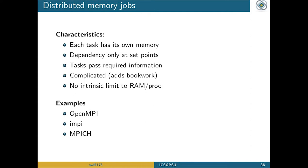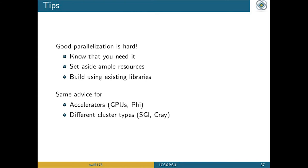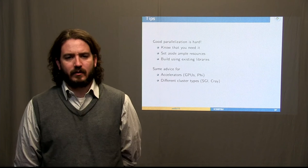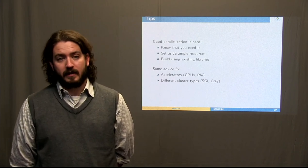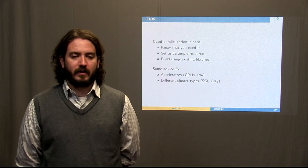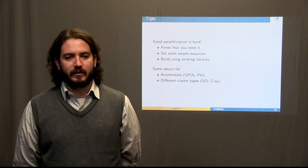Good parallelization is very difficult, so before you get started, know that you actually need to do it. Set aside enough resources — both time and manpower. I keep coming back to using libraries that are already out there; you don't have to reinvent the wheel. I have the same advice for people looking to move to accelerators — whether GPUs or something else — or to different cluster types like Cray clusters, which can be incredibly difficult to get up and running. But if you are running well on a Cray, your jobs will run very quickly — you just have to know you need it and set aside the resources.